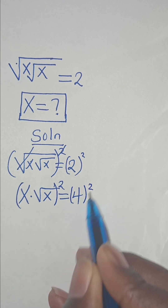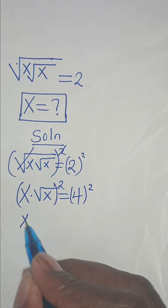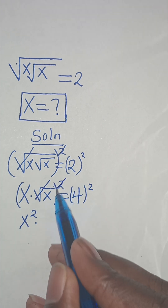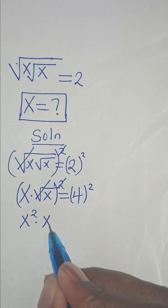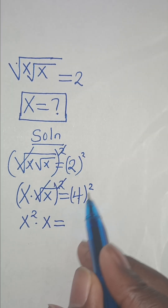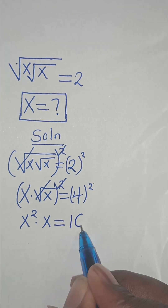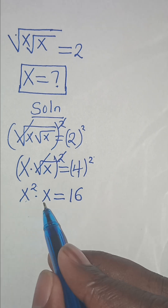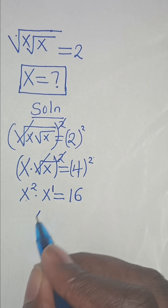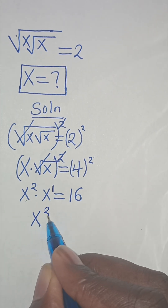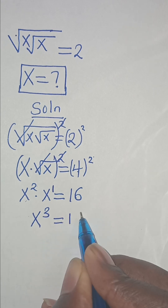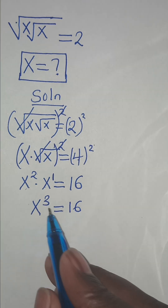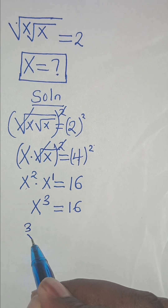Now let's square both sides again to eliminate the second square root sign. This gives us x squared times x, which is x to the power of 3, and this is equal to 4 squared, which is 16.